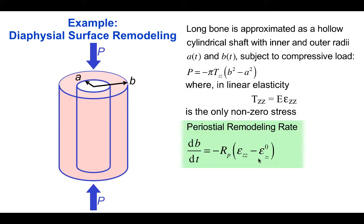So in other words, when the compressive axial strain is equal to ε_zz⁰, then there's no remodeling. Similarly, the inner radius da/dt represents the endosteal remodeling rate.